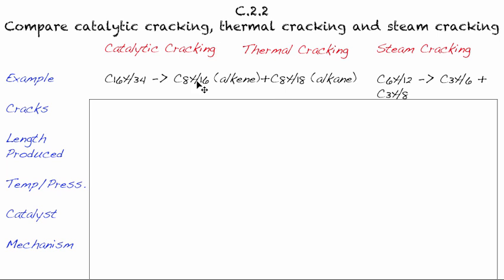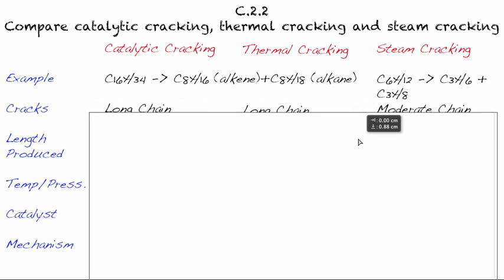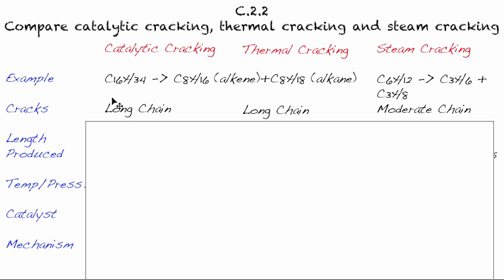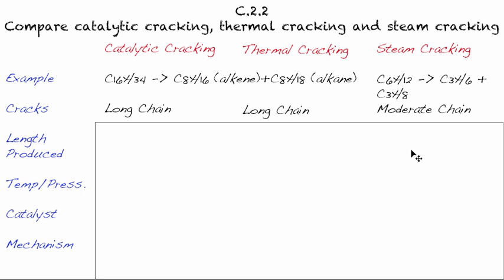That's the same thing in thermal cracking. They work with similar chains. It's just one uses a catalyst, the other doesn't. In steam cracking, we're starting with smaller medium-sized particles, and we're breaking them down into really small ones. Steam cracking is more effective for that. We're taking in both catalytic and thermal long chains, but in steam cracking, we're taking what the IB calls moderate chains, a bit smaller than the long chains.